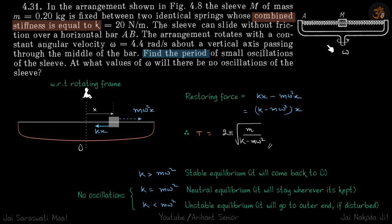We have this arrangement that is rotating with angular velocity omega. There's a spring connecting the two ends and the mass m is kept at the center. The combined stiffness of the spring is equal to k.